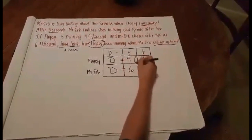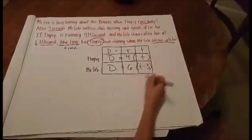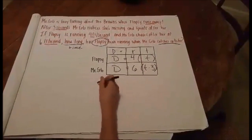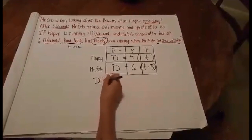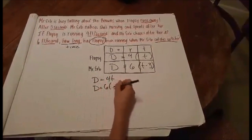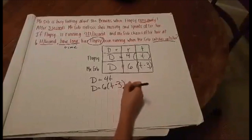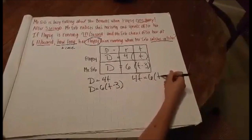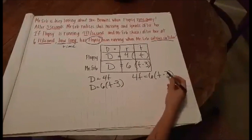So that means I can use substitution here to solve to try to figure out how much time it would take me to catch her. So this means that if D equals four T and D equals six times the quantity T minus three, I can set four T equal to six times the quantity T minus three and solve.